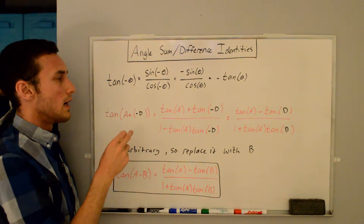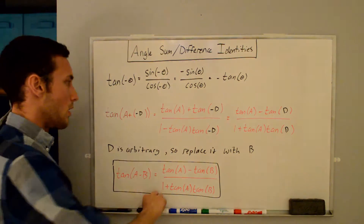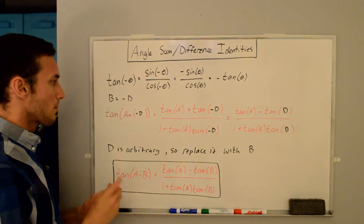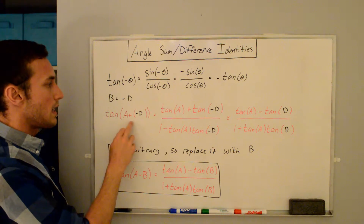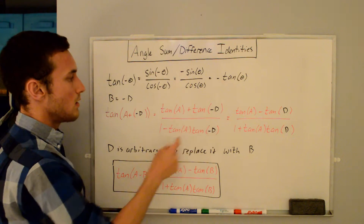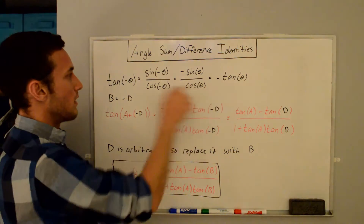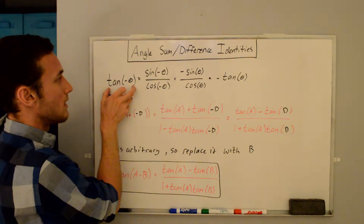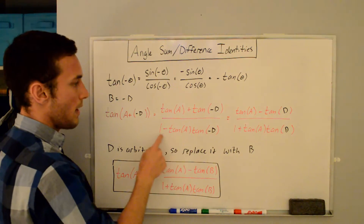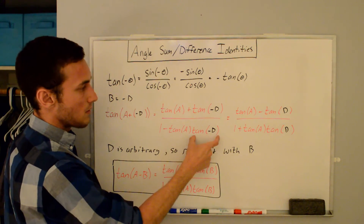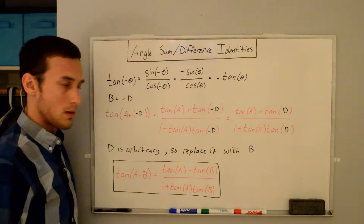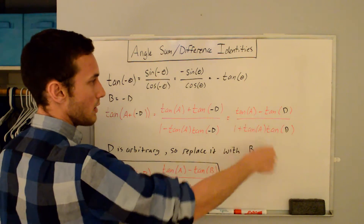Looking at our angle sum identity, if we plug in b equal to negative d — because we're trying to find tangent of a minus b — we get tangent of a plus tangent of negative d over one minus tangent a times tangent of negative d. Using the odd function result, tangent of negative d equals negative tangent of d, which is why we get a minus sign in the numerator. On the bottom, the tangent of negative d introduces a minus sign that changes to a plus sign, giving us one plus tangent a tangent d. Since the angle d is arbitrary, we replace it with b.